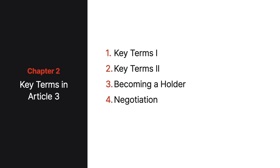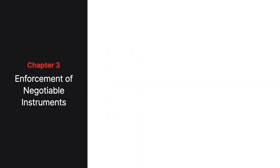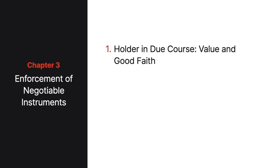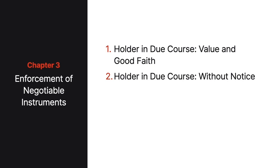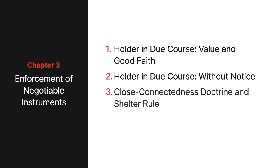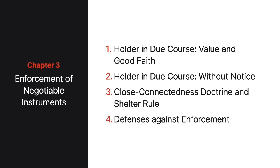we'll learn about the requirements for a valid negotiation and endorsement. In Chapter 3, we'll learn how one obtains the coveted holder-in-due-course status, and how difficult it is to prevail in litigation against a holder-in-due-course. We'll also learn about the Close Connectedness Doctrine and Shelter Rule, then conclude with a discussion about personal and real defenses.